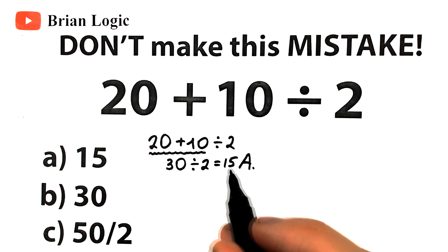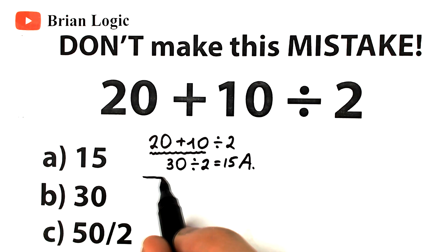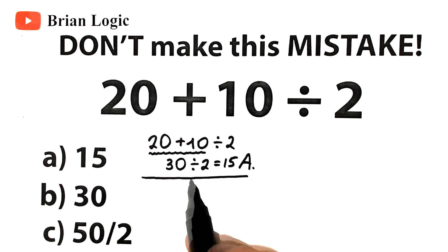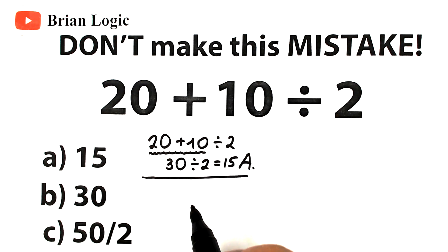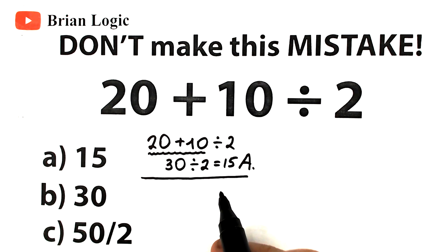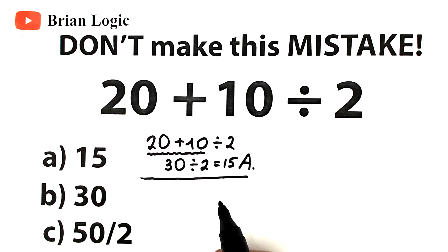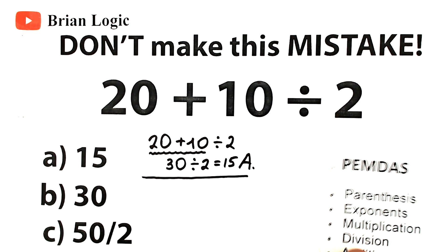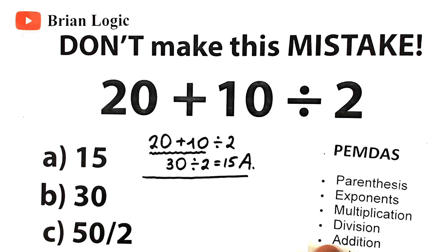I don't want to say this is correct or incorrect yet — I want you to understand that in math we can't solve this problem however we want. We should know about order of operations. The order of operations is a set of rules used to determine which operations to perform first in order to evaluate a mathematical expression. If the correct order is not used, we will end up with an incorrect solution. PEMDAS is just one of the mnemonics used to help remember the order of operations.